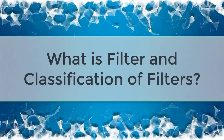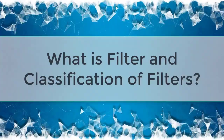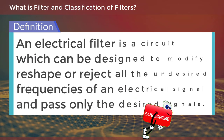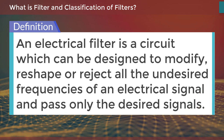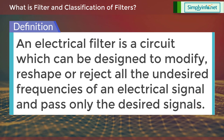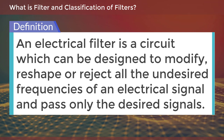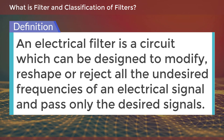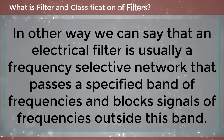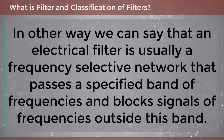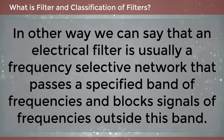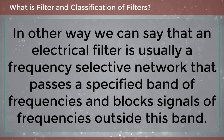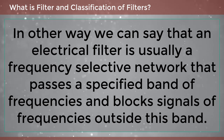What is a filter and classification of filters? An electric filter is a circuit which can be designed to modify, reshape or reject all the undesired frequencies of an electrical signal and pass only the desired signals. In other words, an electrical filter is usually a frequency selective network that passes a specified band of frequencies and blocks signals of frequencies outside this band.